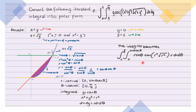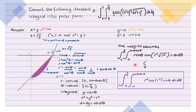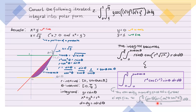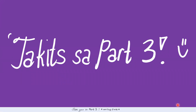Okay na ang ating limits of integration. Sa integrand meron tayong y — ang pamalit sa y ay r sine theta. And then meron din tayong x squared plus y squared, ang pambalit dyan ay r squared, so square root of x squared plus y squared ay square root of r squared. For dx dy naman, yan yung dA natin, so papalitan natin yan ng r dr d theta. Simplify lang natin — ang square root of r squared ay r lang, since r is non-negative. So r times r squared ay r cubed, multiply pa sa r, so we have r to the fourth, and we get the final double integral. Kapag i-integrate na, the result involves tangent cube theta terms, however that is no longer doable by Math 21 or Math 22 techniques. So that's it for the second part — see you sa part 3.